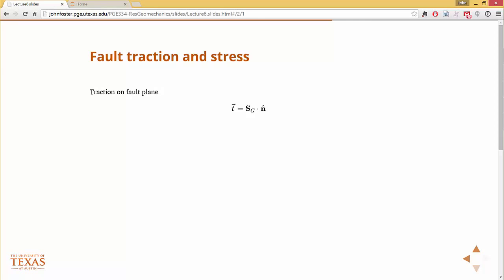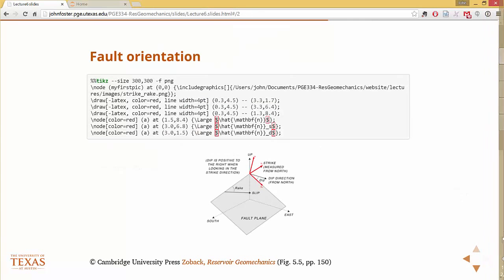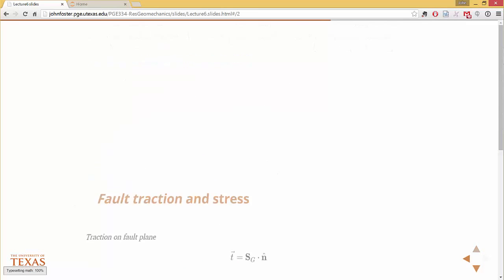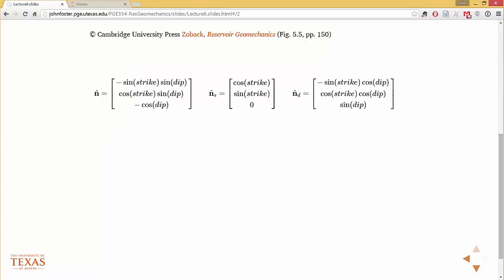I plugged in the strike and dip that I gave you in the problem statement into those formulas. There's nothing magic about these formulas — we could have worked through the geometry. These are just the projections of the original coordinate system onto these normals. It's just a bunch of little geometric transformations. These equations were derived from nothing but geometry — they just define the angles between the geographic coordinate system and the fault coordinate system.